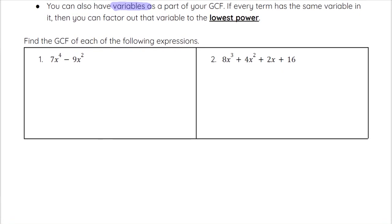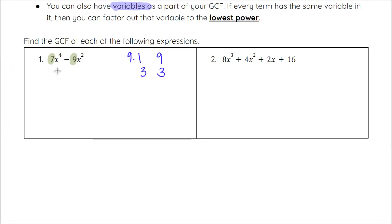The first example: we see 7x to the fourth minus 9x squared. For the GCF, I always start by looking at the numbers — the coefficients in front of the variables. Looking at 7 and 9, they do not have any common factors other than 1. If you think about the factors of 9: 1, 9, and 3. None of those except 1 go into 7 as well, so there's no integer that divides into both 7 and 9 other than 1.